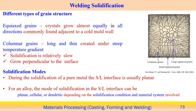Here we see the typical structure and different types of grain structure. First, we understand the different types of grain structure associated with the welding process or the casting process. First, we see there are some equiaxed crystals. Equiaxed crystal means growth almost equally in all directions, commonly found adjacent to the cold mold wall. Over a mold wall, we can see the equiaxed kind of structure usually forms.